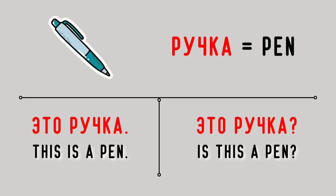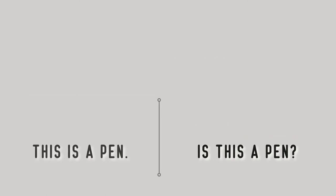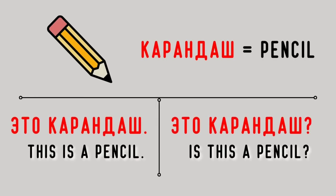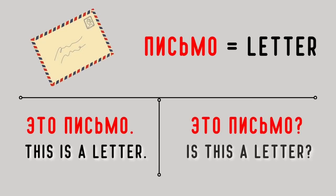Ручка — pen. Это ручка. This is a pen. Это ручка? Is this a pen? Карандаш — pencil. Это карандаш. This is a pencil. Это карандаш? Is this a pencil? Письмо — letter. Это письмо. This is a letter. Это письмо? Is this a letter? Это письмо.